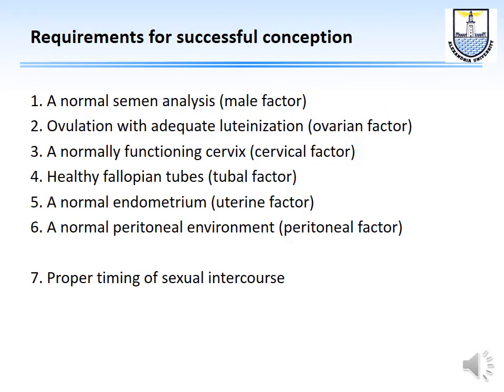For a pregnancy to be achieved, we need: a normal semen analysis; ovulation with adequate luteinization; a normally functioning cervix; healthy fallopian tubes; a good endometrial factor where implantation will occur; a normal peritoneal environment that won't prevent egg fertilization; and finally, proper timing of sexual intercourse.